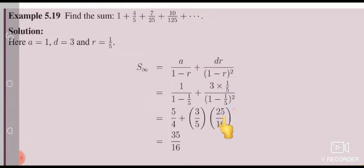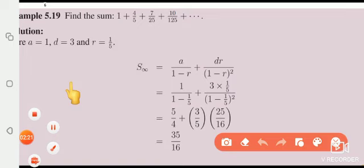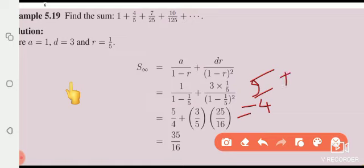So 5/4 the whole square is 25/16. Let's simplify, which equals 5/4 plus, this cancels, so we have 3 times 5 is 15. Denominator you have 16.